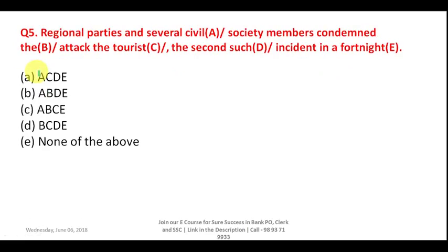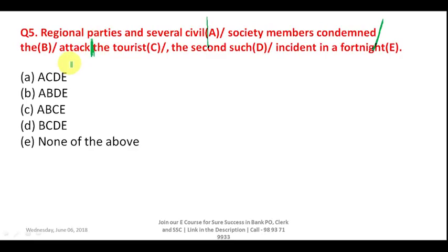Question 5: 'Regional parties and several civil society members condemned the attack, the tourist, the second such incident in a fortnight.' Examining each part — 'regional parties and several civil society members condemned' is correct. However, 'the attack' needs 'on' — the attack on the tourist. So part C is wrong and your answer is B, because B doesn't have C.